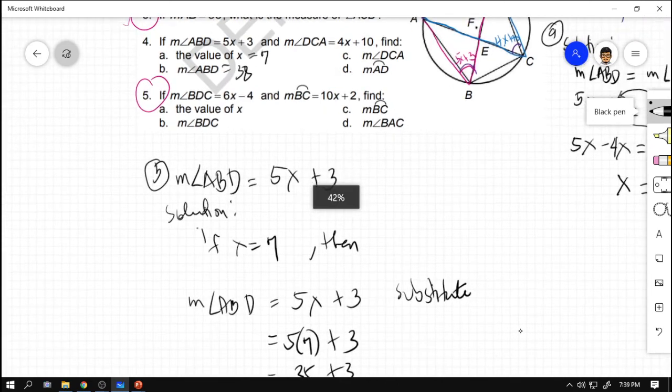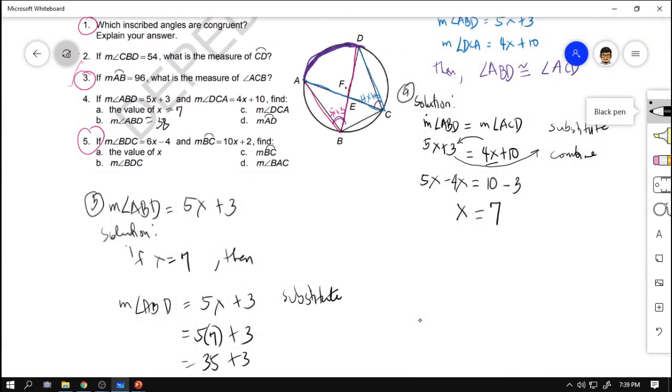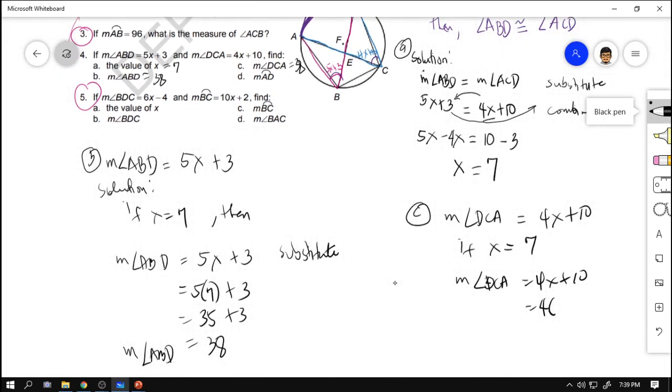Next, letter C. Remember that angle ABD is congruent to angle DCA. Therefore, si DCA is also 38. So paano mapapatunay na 38 din yun? The measurement of DCA is equal to 4X plus 10. If X is equal to 7, patunayan natin na 38 yun. So if that's the case, then the measurement of angle DCA is equal to 4X plus 10. Substitute X with 7. 4 times 7 plus 10. 4 times 7 is 28 plus 10, that is 38. So it is now proven that the measurement of angle DCA and the measurement of angle ABD are congruent, because they intercept the same arc.